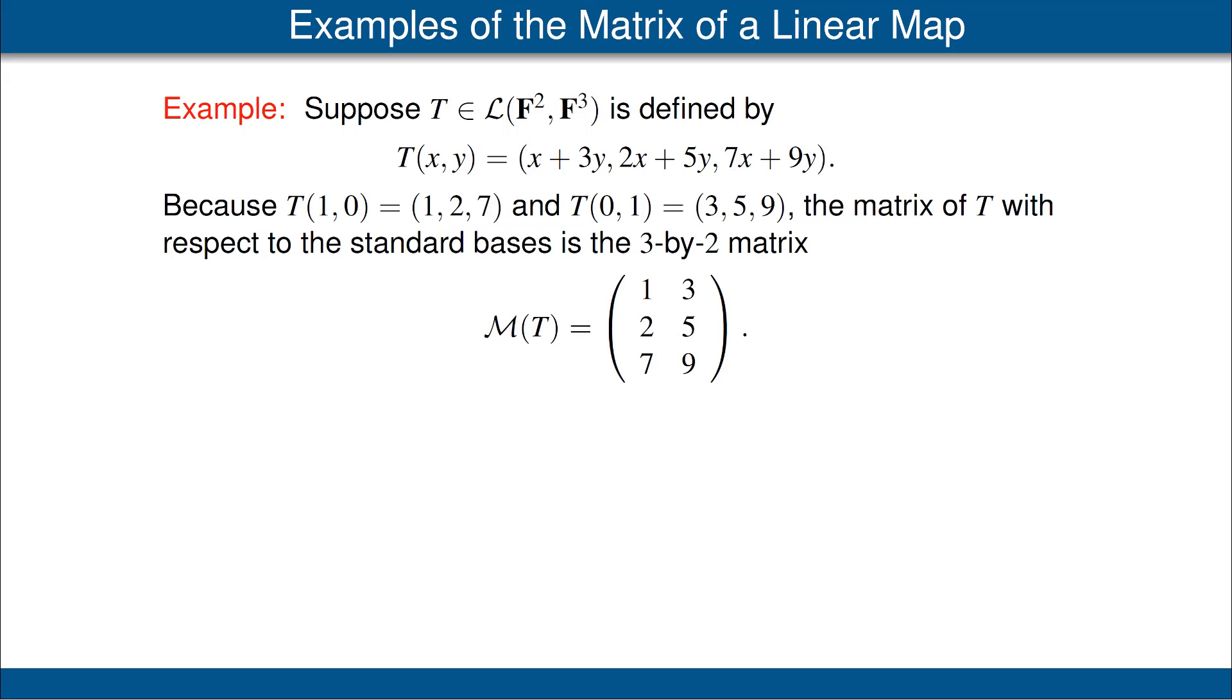Thus, to find our matrix of T, first we need to evaluate T on the basis vectors. That's done in the third line on this slide, where we see what T(1,0) and T(0,1) are, simply using the formula for T above. Let's start by looking at T(1,0), which is the vector (1,2,7). That vector is 1 times the first basis vector of F³ plus 2 times the second basis vector of F³ plus 7 times the third basis vector of F³. Thus, the numbers that go in the first column are 1,2,7. Similarly, the numbers that go in the second column are 3,5,9.